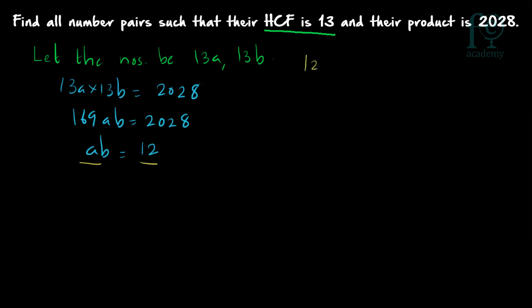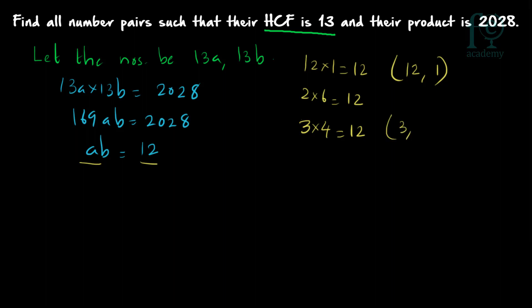Let's find the co-prime pairs. 12 × 1 = 12, and 12 and 1 have only 1 as the common factor, so (12, 1) is a valid pair. Next, 2 × 6 = 12, but 2 and 6 are not co-prime — the HCF of 6 and 2 is 2, so you cannot take (2, 6). Then 3 × 4 = 12, and 3 and 4 do not have any common factor other than 1, so (3, 4) is a valid co-prime pair.